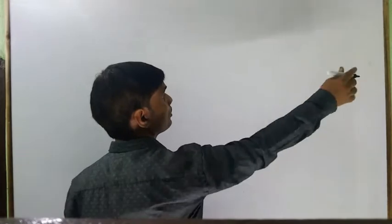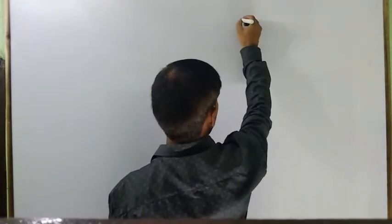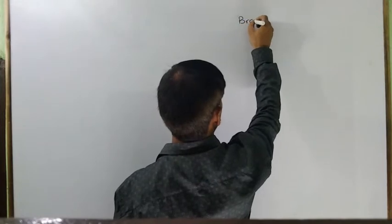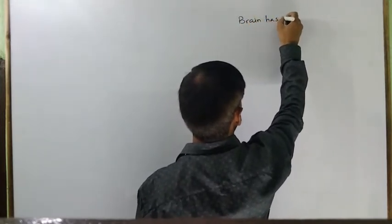Hello students, welcome to LST. Today I am going to discuss the structure of the brain. In the earlier video we had discussed the parts of the neural system, and we know that the neural system consists of two parts: central nervous system and peripheral nervous system. In this video I am going to discuss the main part of the central nervous system, and that is the brain. The brain has three parts.